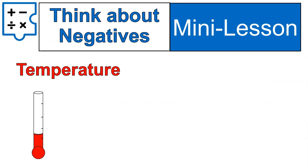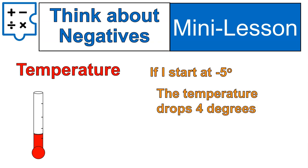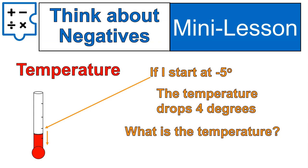Let's think about negatives for a second. If I start at negative 5 and the temperature drops 4 degrees, what does that mean? Well, it means it's going down 4 more degrees. So I'm starting there and then it's going down. What would we say the temperature is? Started at negative 5, went down 4, it's going to go down to negative 9.